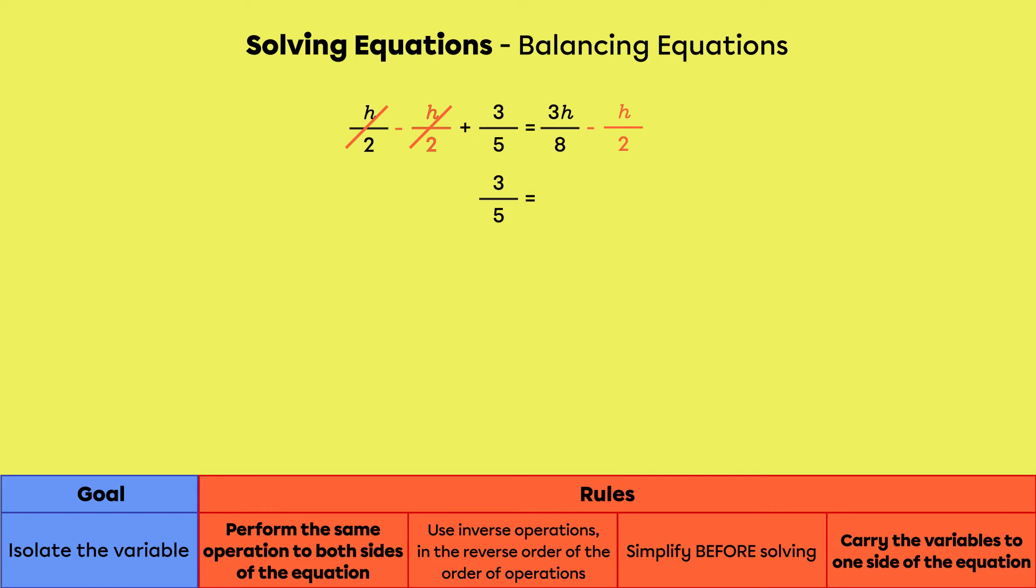On the right side, to subtract 3h over 8 by h over 2, we first have to write these fractions over the same denominator. The fraction h over 2 can be written in 8 by multiplying its numerator and its denominator by 4. The fraction becomes 4h over 8. We can now perform the subtraction. 3h minus 4h gives negative 1h. We can remove the coefficient 1, but we must keep the minus sign. The result is negative h over 8.